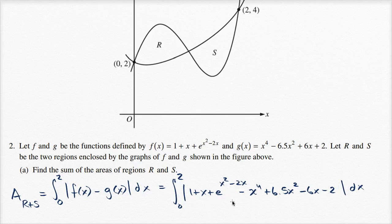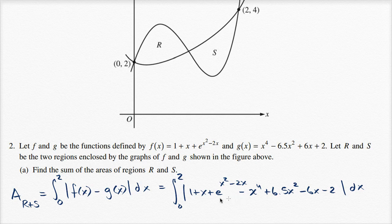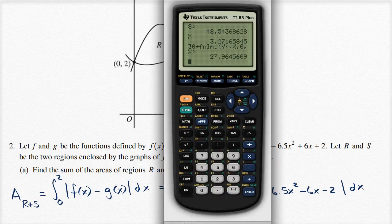Now this would be pretty hairy to solve if we did not have access to a calculator, but lucky for us on this part of the AP exam, we can use a graphing calculator. So let's do that to evaluate this definite integral. And if you're wondering why it's minus 2 instead of plus 2, remember we're subtracting g(x)—we're finding the difference between them. So let's input this function into my calculator.